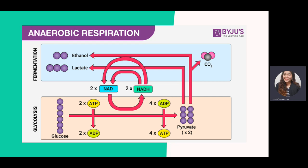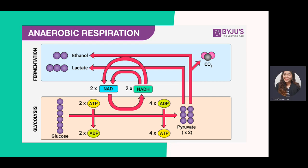Anaerobic respiration is commonly used in the making of wine. When grape juice is fermented using yeast, it produces carbon dioxide and ethanol — the wine. Pyruvate can also become lactate through lactic acid fermentation, which occurs in muscle cells with the formation of lactic acid.